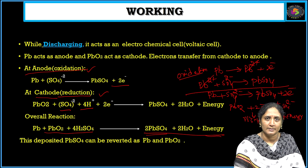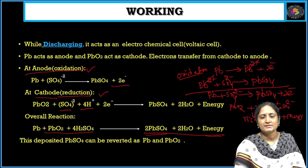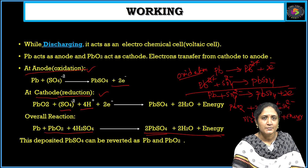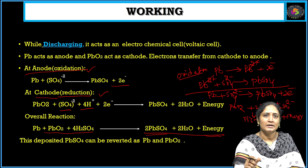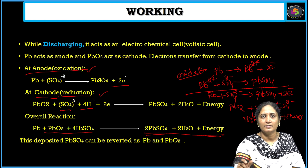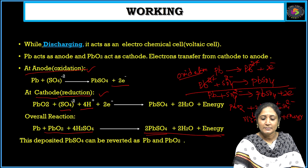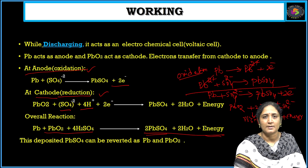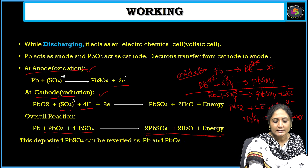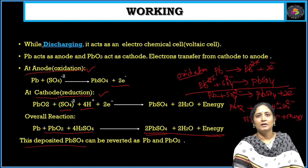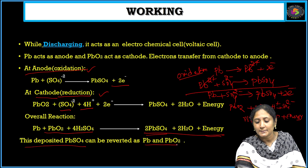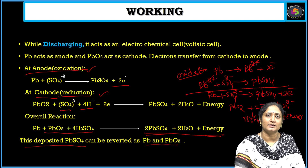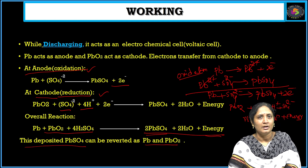At anode, oxidation takes place; at cathode, reduction takes place. By undergoing oxidation and reduction, the overall reaction liberates PbSO₄ and some amount of energy. This acts as a voltaic cell, converting chemical energy into electrical energy. After usage for some time, every battery will be discharged — it will come down to zero.